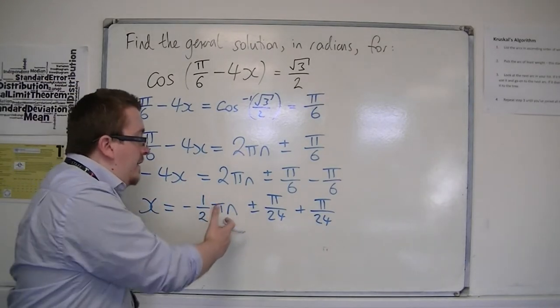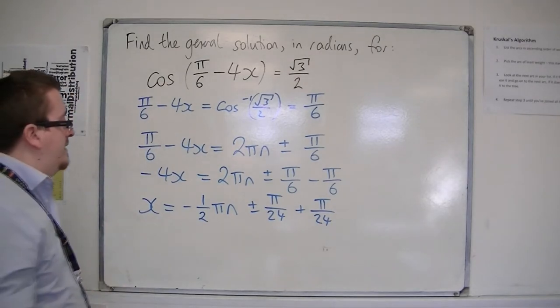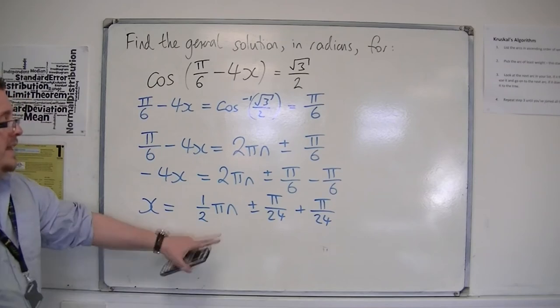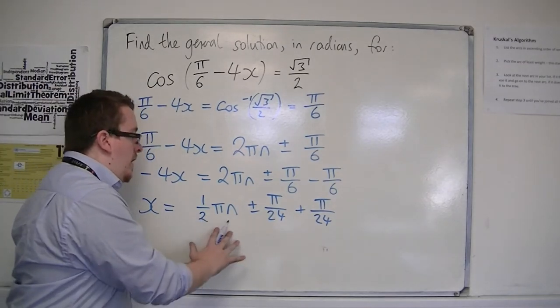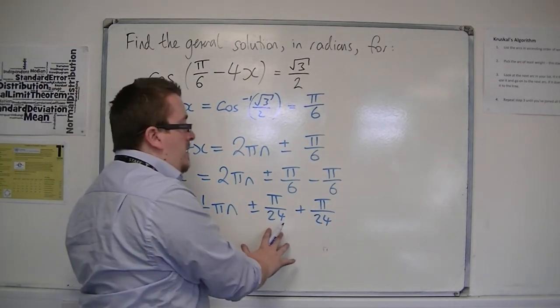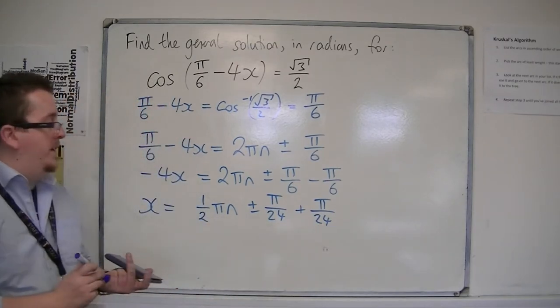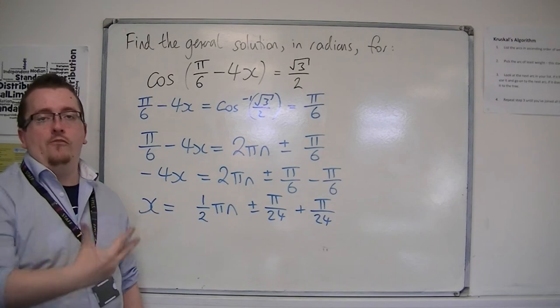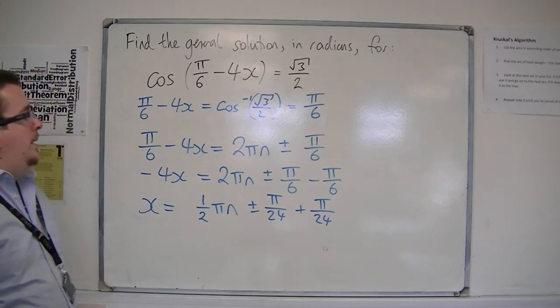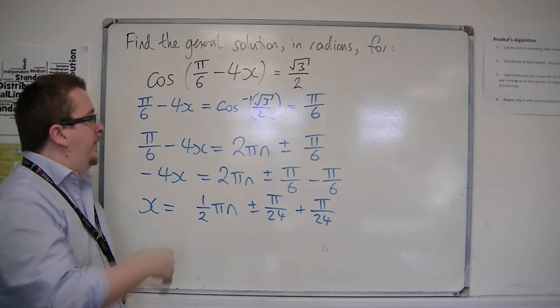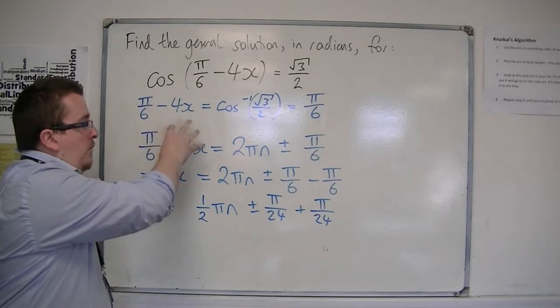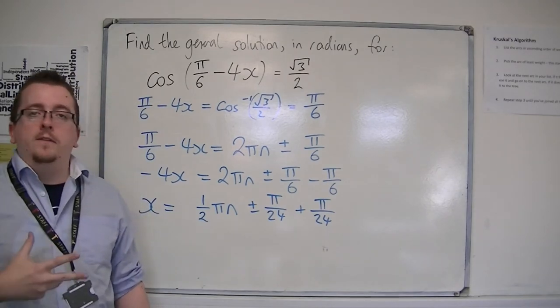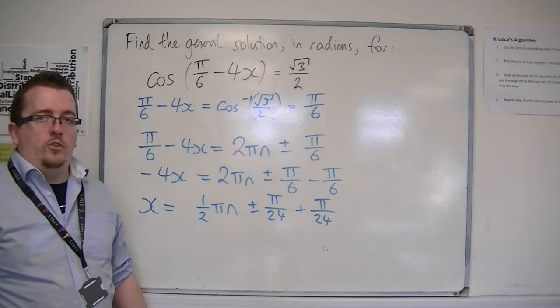But because n is positive or negative, I don't really need to have a negative sign in front. So I can write it just as one half pi n plus or minus pi over 24 plus pi over 24. So there's a few different equivalent ways of writing this one down. But the process of writing out the general solution and then reorganizing it and putting x equals hasn't really changed.